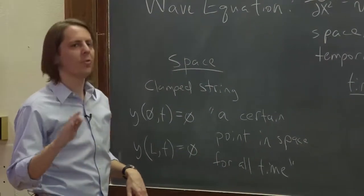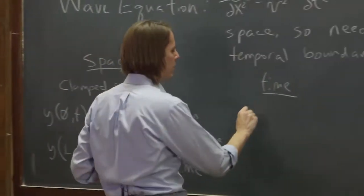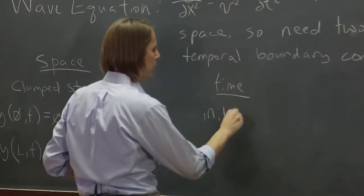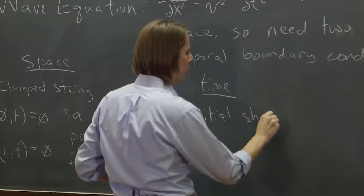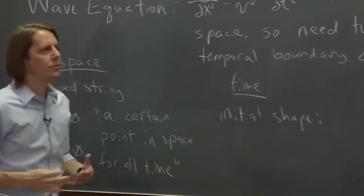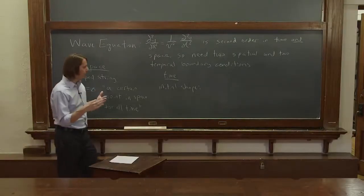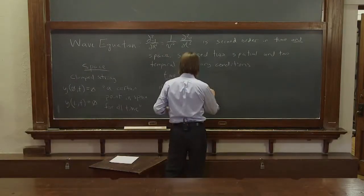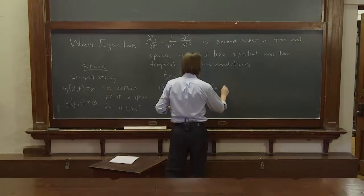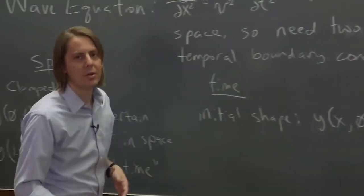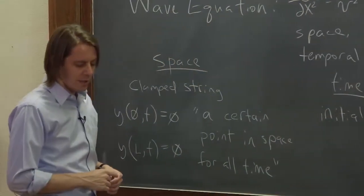So time, we could describe the initial shape. This is what we did with the Fourier series. We said there's a shape, there's a pulse. We described it as some shape y of x. But we said now that's the initial shape, y of x at t equals 0.